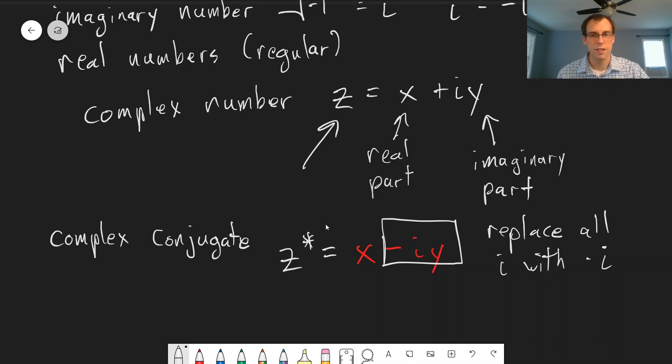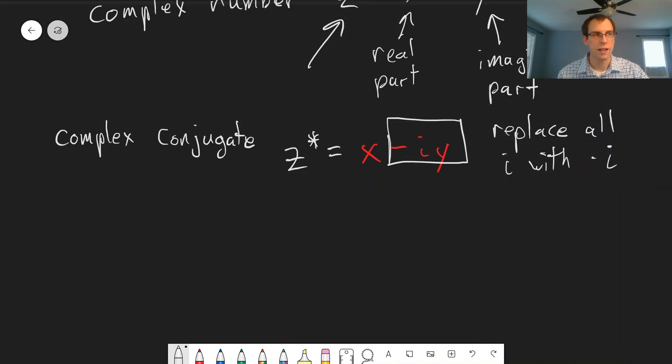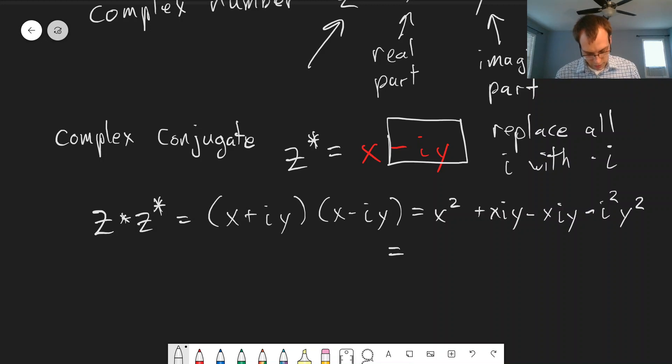What's useful about the complex conjugate and why it shows up fairly often is that if you multiply a complex number times its complex conjugate, let's see what we get. If we have x plus iy times x minus iy, we can just multiply this together like we normally would. So we'll get x squared plus xiy minus xiy minus i squared y squared. If we simplify this, these two terms in the middle will cancel out.